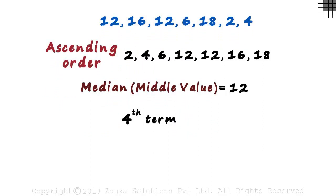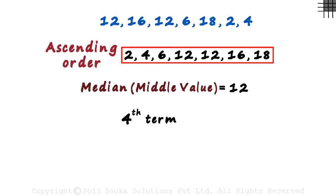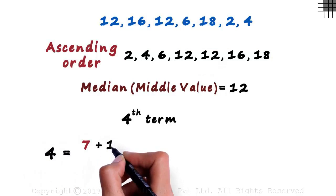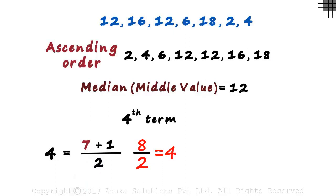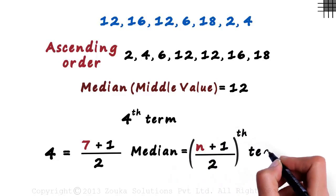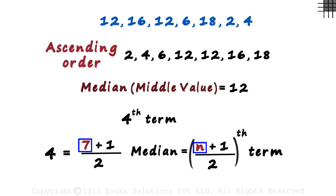What we should be interested in is this number four. Which term is the median? Look at the set of numbers — we have seven terms here. And four can be written as (seven plus one) divided by two, which is eight divided by two, which equals four. We can say that the median is the (n+1)/2 th term. Here, n is seven, which is why we say that the fourth term is the median.